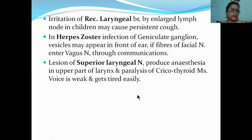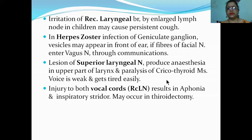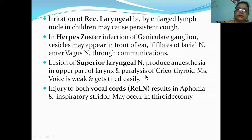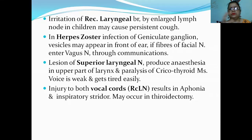Lesion of the superior laryngeal nerve produces anesthesia in the upper part of the larynx and paralysis of the cricothyroid muscle, causing the voice to be weak and tired easily. Injury of both vocal cords due to recurrent laryngeal nerve damage results in apnea and inspiratory stridor - vibration noises during inspiration.